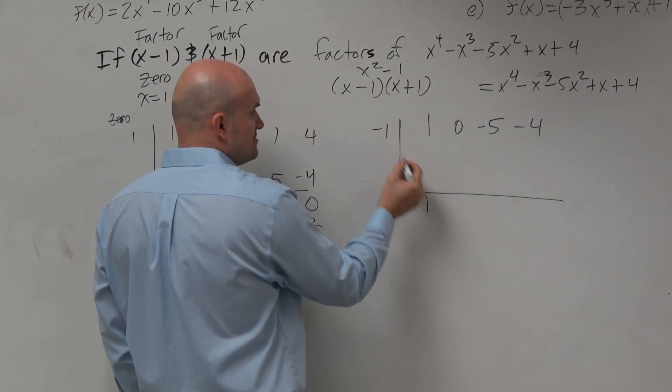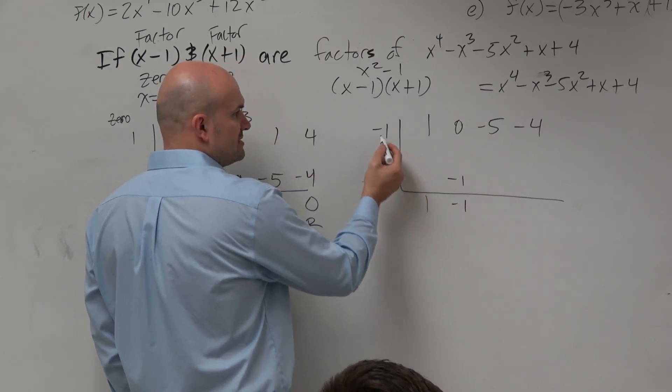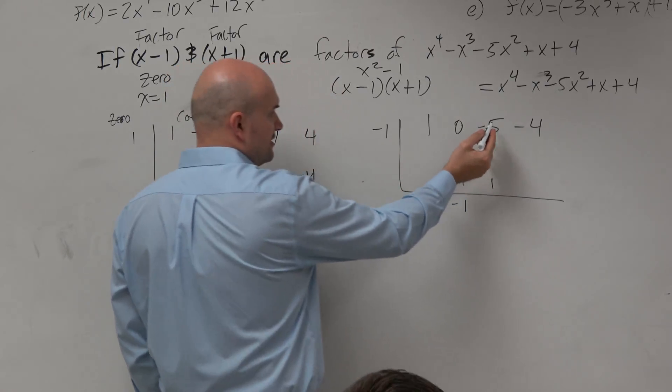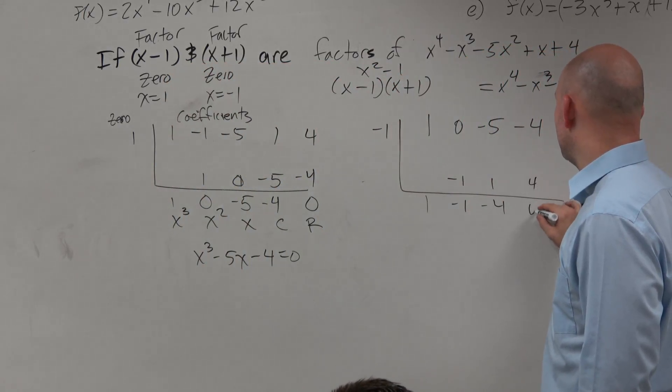So now, again, bring down the 1. 1 times negative 1 is negative 1. 0 plus negative 1 is negative 1. Negative 1 times negative 1 is 1. Negative 5 plus 1 is negative 4. Negative 1 times negative 4 is positive 4. And we get a 0.